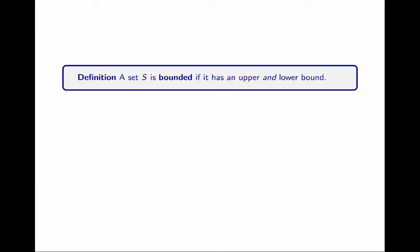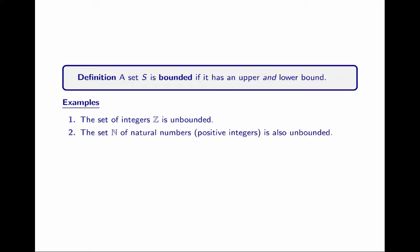Now, when we say a set is bounded without an upper or lower qualifier, we mean it has both an upper and lower bound. So the set of integers is unbounded. The set of natural numbers — that is, all positive integers — is also unbounded. It has a lower bound but no upper bound.